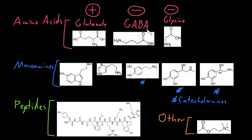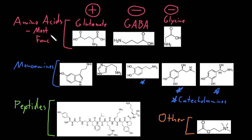GABA is the most common inhibitory neurotransmitter in the brain, while glycine is the most common inhibitory neurotransmitter in the spinal cord. The amino acid neurotransmitters are really involved in most functions of the nervous system — pretty much anything the nervous system is doing, at some point glutamate, GABA, and/or glycine are probably involved in moving information through those networks.